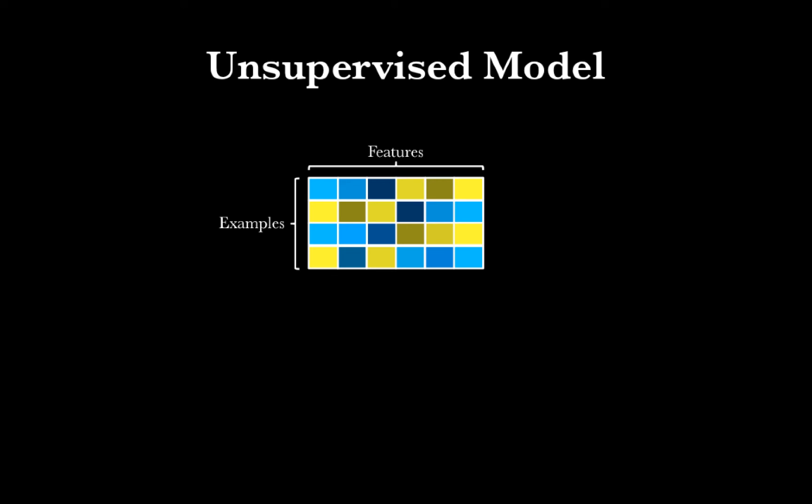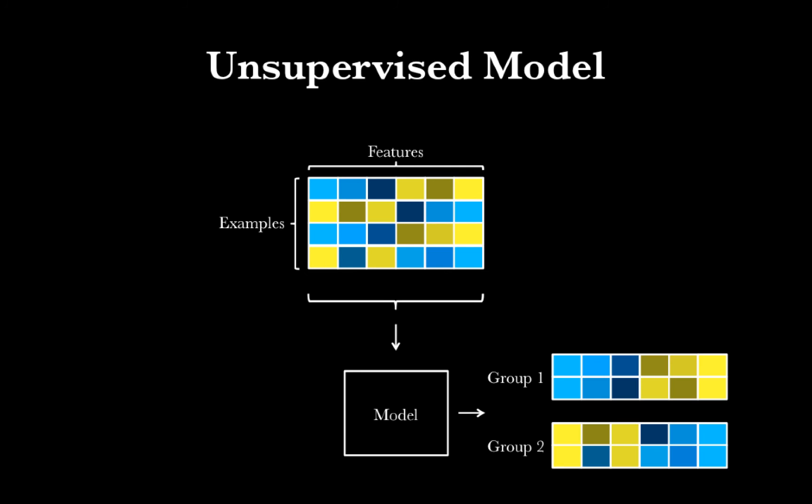So for the unsupervised model, because we don't have labels, we're just going to take the examples and the features. Those are going to get used to create a model. What that model will be capable of is taking the examples we provided and separating them into two or more groups based on their gene expression.